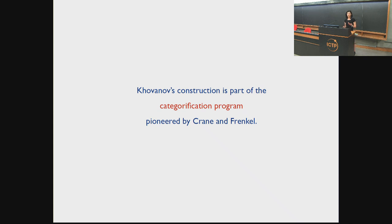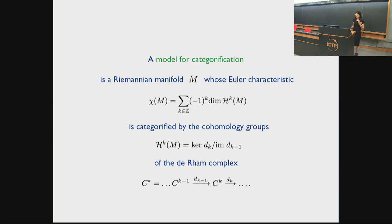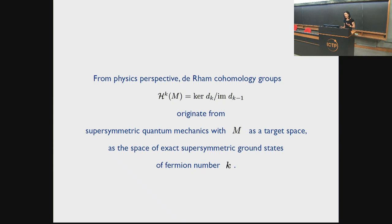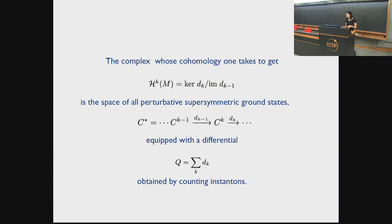Khovanov's construction is part of the categorification program pioneered by Igor Frenkel and Mim Crane. A model for categorification is obtained by taking a Riemannian manifold whose Euler characteristic is categorified by cohomology groups of the de Rham complex. From a physics perspective, de Rham cohomologies originate from supersymmetric quantum mechanics with Riemannian manifold M as a target space, as the space of exact supersymmetric ground states of a given Fermi number.